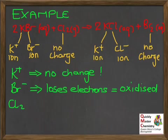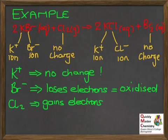The chlorine on the left goes to chloride ions on the right — that's a gain of electrons, getting an electron into the outer shell to make the Cl⁻ ion. Gain of electrons is reduction, so the chlorine has been reduced. Note that we don't say the potassium bromide has been oxidized — it's the bromide ions in the potassium bromide that have been oxidized. We get quite specific when describing what's oxidized and reduced.